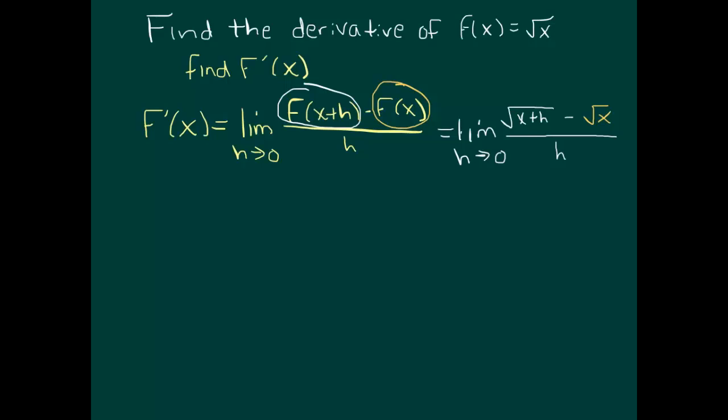So again, we can't plug in 0 for h, so we've got to get it to cancel. Now it seems tough to know what to do at this point to get that h to cancel. But really, the issue is that our numerator has those square root expressions. And since that h is kind of trapped underneath that square root, we need a way to get it out.